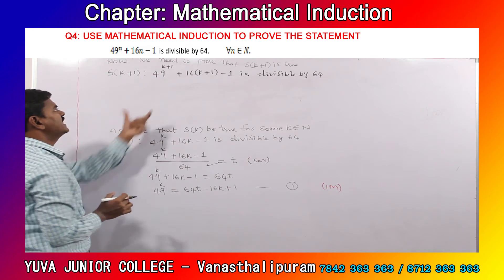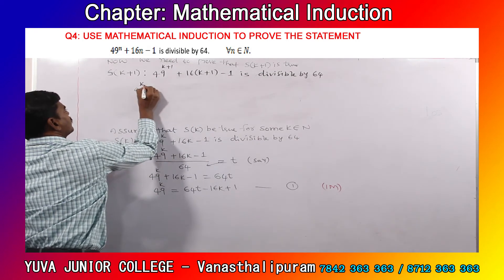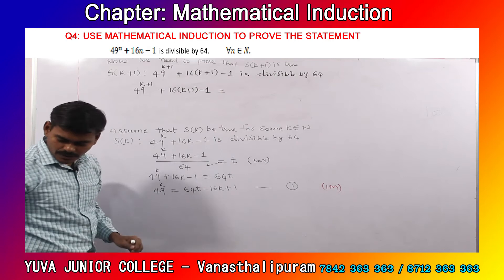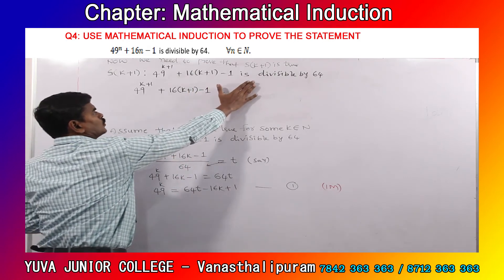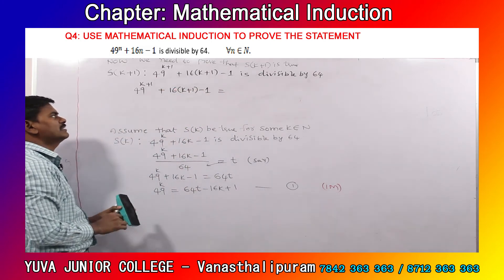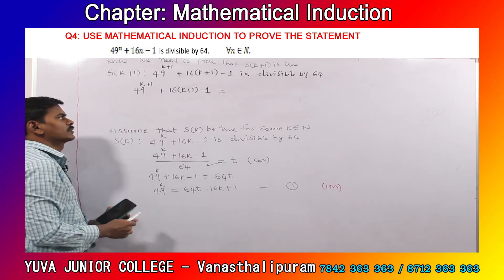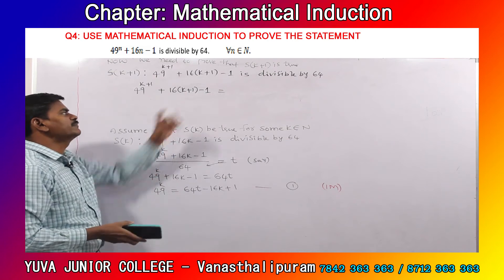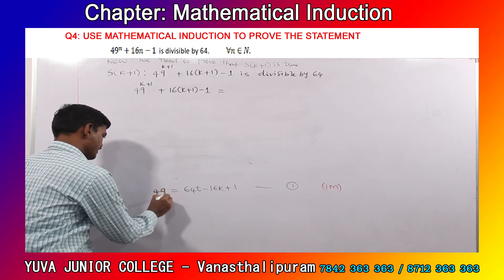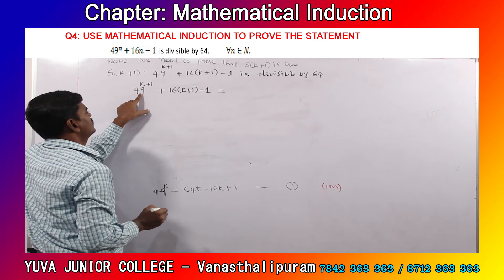To prove this, we need simplification. In general, we begin the simplification with the term 49 power (k plus 1) plus 16(k plus 1) minus 1. We must try to get its mathematical form — instead of 'divisible by 64', we should automatically get 'divided by 64'. That is why we perform some simplification. Keep equation 1 for use later.